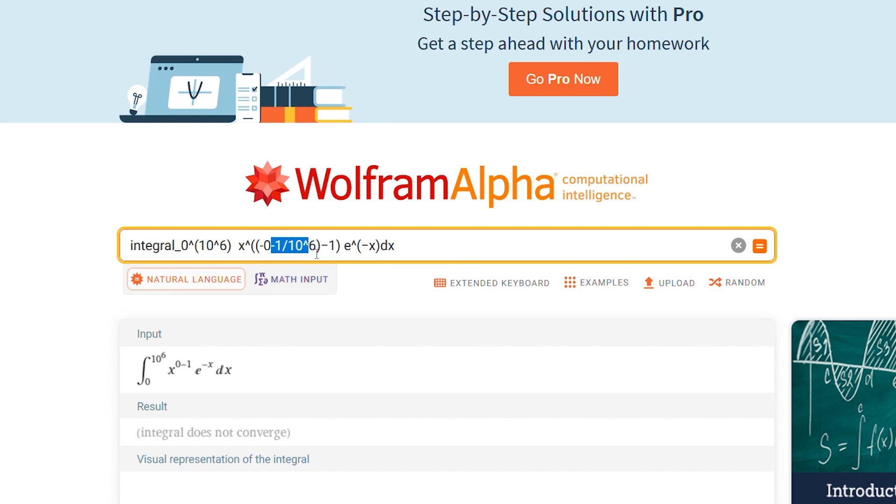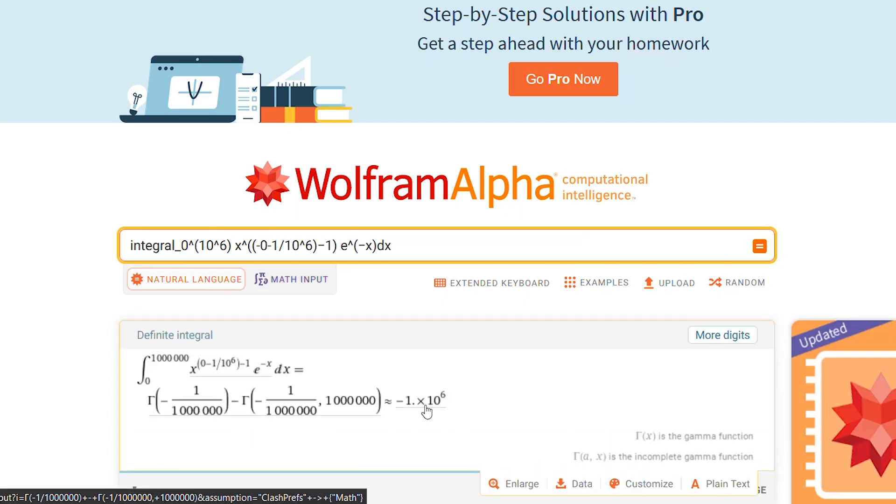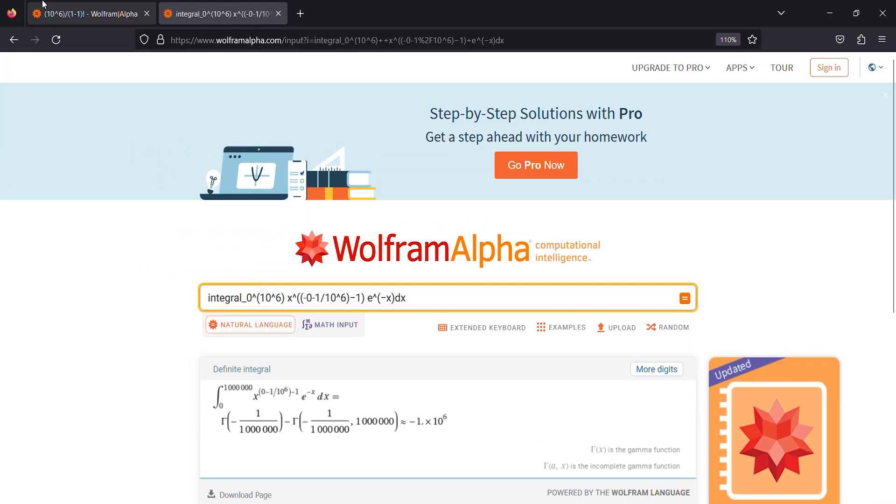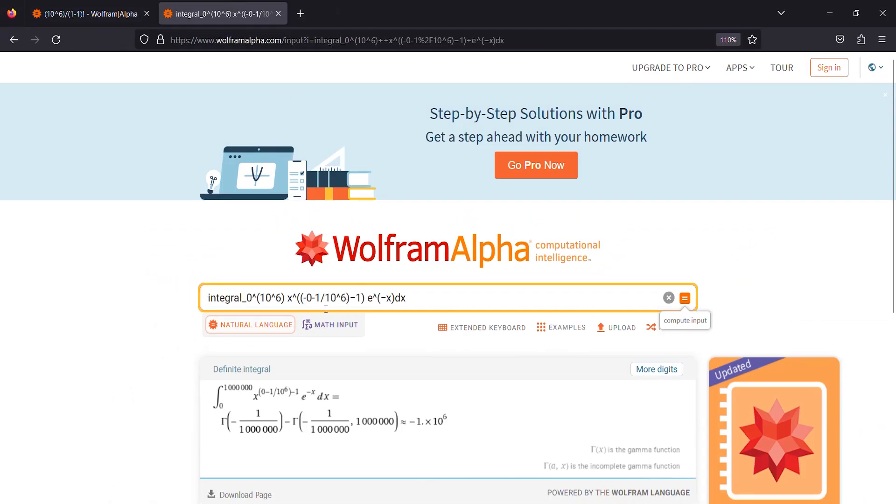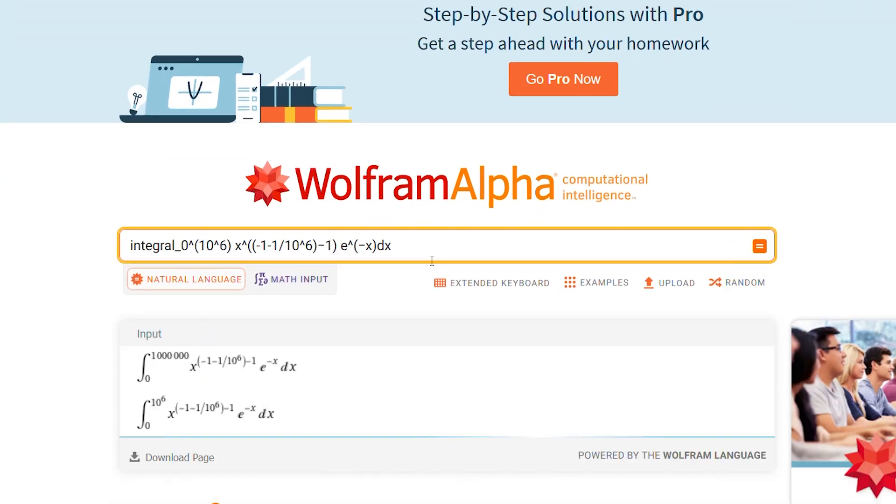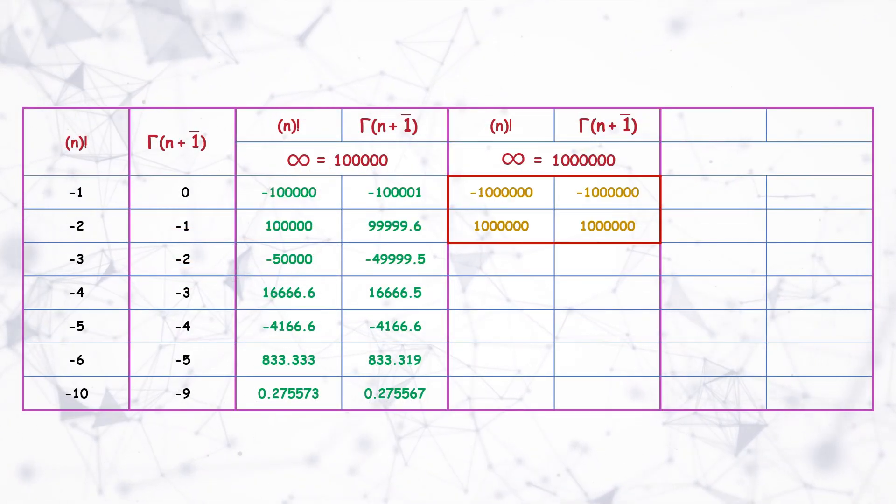For calculation purpose it will be 1 by 10 to the power 6. So note that there is a chance of very negligible deviation from actual result. So here also the solution is 1 million. Now we will see for minus 2 factorial. Both give 1 million as a solution.